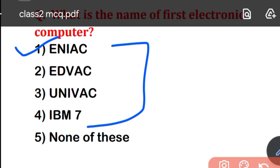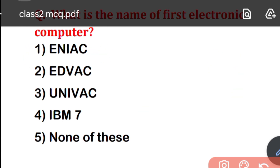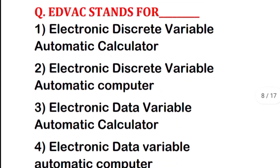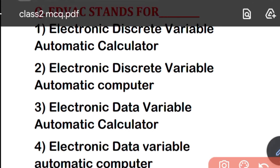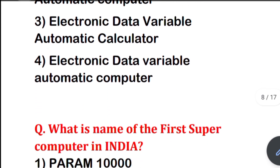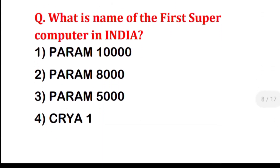EDVAC stands for — the full form is Electronic Discrete Variable Automatic Computer. That is the EDVAC full form. I will cover all short forms and abbreviations separately.